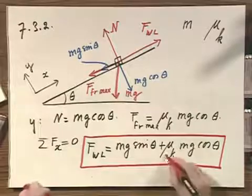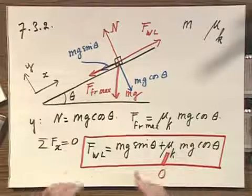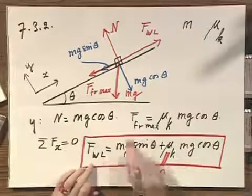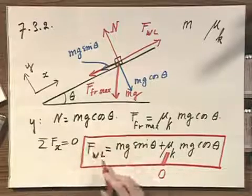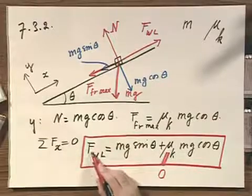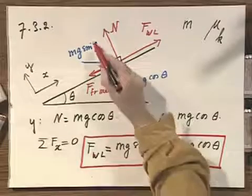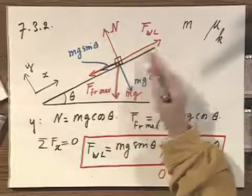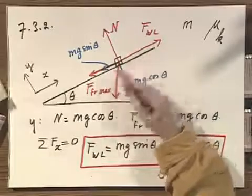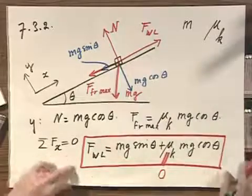I hope you notice that when you make mu k 0, you find an answer which is completely trivial — an obvious answer — that the force that I have to apply would be exactly mg sine theta, which is a result that you must have seen many times in the past.